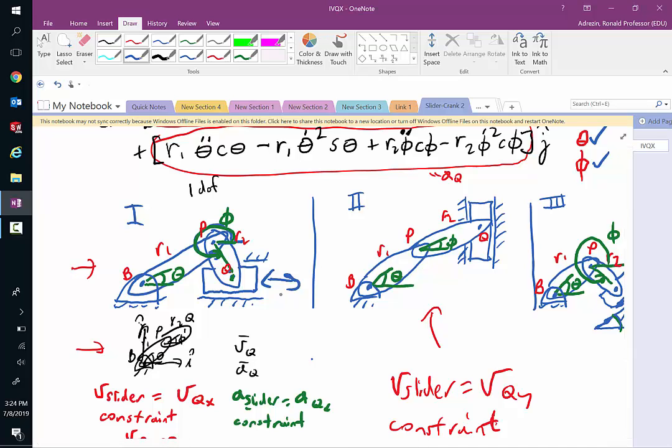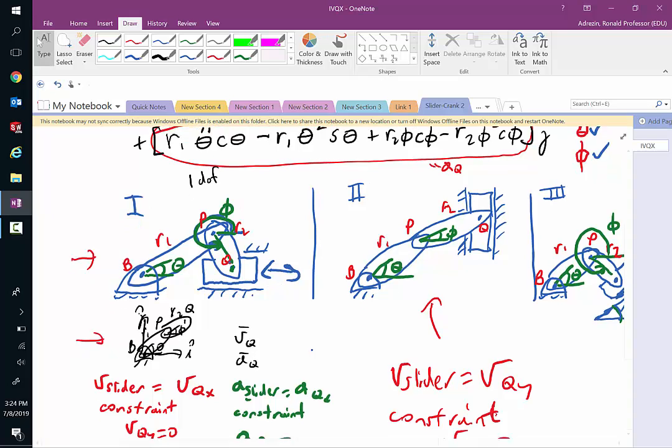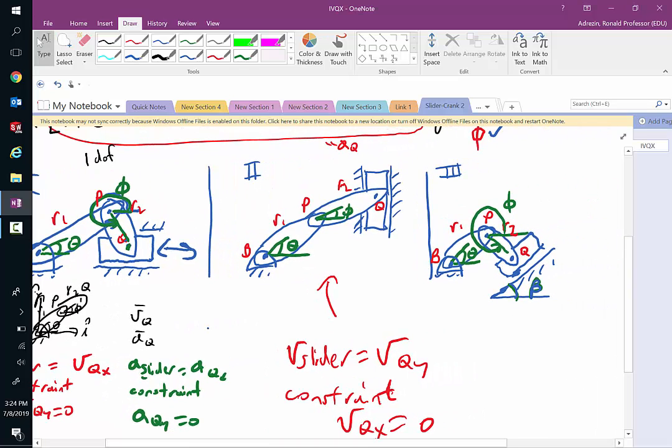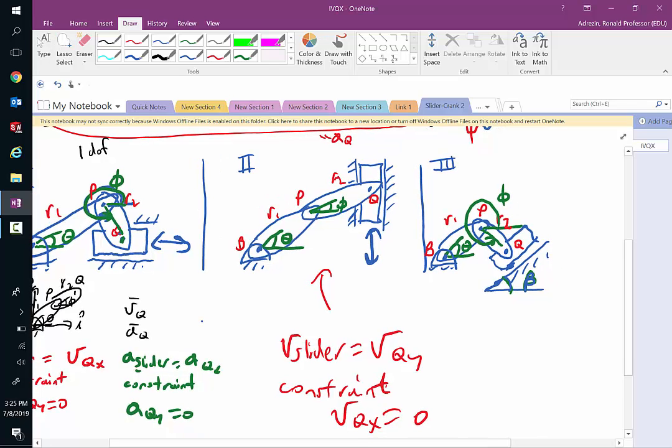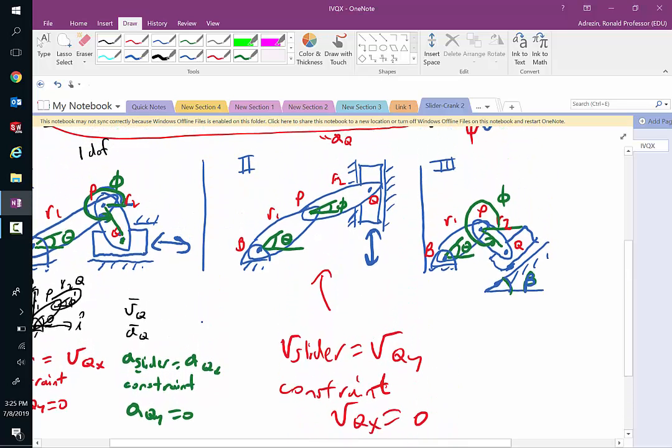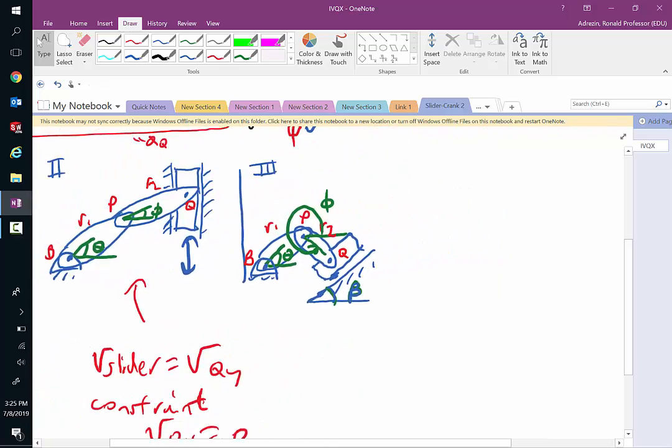And similarly for the acceleration. The acceleration of the slider was just the AQX component from a kinematics table of a double pendulum, and the constraint was simply AQY equals zero. When we went to this vertical case where the slider or the piston can move vertically, we would say that the velocity of the slider is VQY, the constraint is VQX equals zero, and similarly the acceleration slider is the AQY component, and the constraint was AQX equals zero. So now we're ready for this general case here.